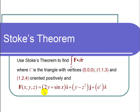and f is the vector field f(x,y,z) equal to (2y plus sine of x) times i plus (y minus z squared) times j plus e to the z times k.